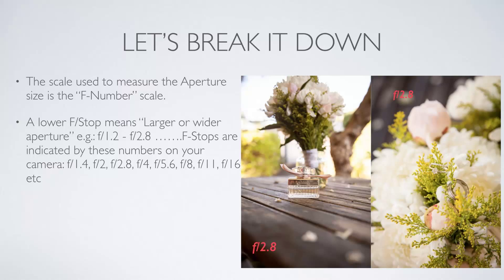For example, f1.2 or f2.8 are larger, wider apertures. F-stop numbers appear on your camera in increments such as f1.2, f1.4, f2, f2.8, f4, f5.6 and so on. You can see those numbers on the back of your camera or in the top view window to identify which one you need for the shot.